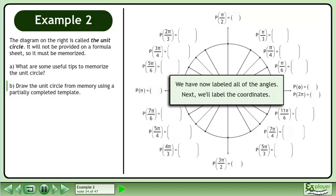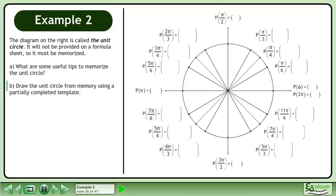We have now labeled all of the angles. Next, we'll label the coordinates. Label the axis coordinates first. Write the coordinates of each axis angle.